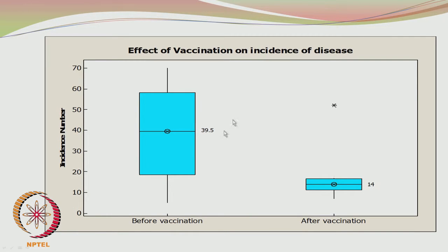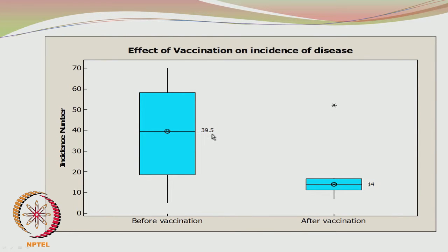The box plot was generated using Minitab and it shows before vaccination and after vaccination. The median value is the same as the mean value in this particular case. This is the third quartile, second quartile, first quartile, and this is the whisker. Here again you have a whisker, and the median has considerably reduced from 39.5 to 14. Whiskers are drawn up to a data point which is 1.5 times the interquartile range.